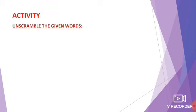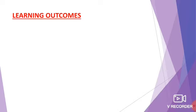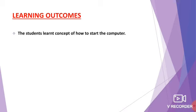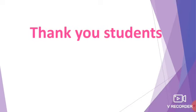Next, I have given the activity — unscramble the given words. You have to find out the correct spelling of these words. You can refer to the vocabulary and then do it. I hope you all understand the lesson very well. What we have learned from this concept: how to start the computer, authentication which includes login and logout, and finally how to shutdown the computer. I hope today's class was very useful. See you next week with a new topic. Thank you, my dear children.